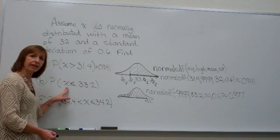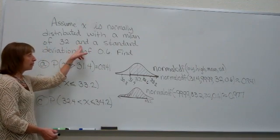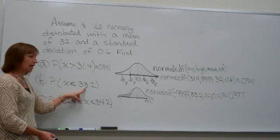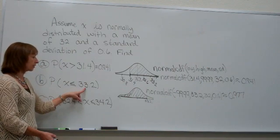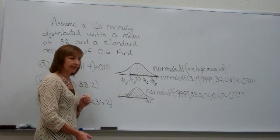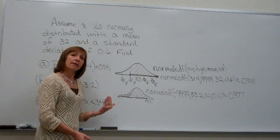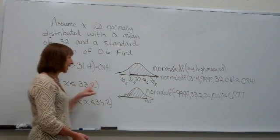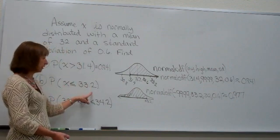So a probability of picking a value at random out of that distribution that my value picked at random would be less than or equal to 33.2 is a probability of 0.977. Or I could say 97.7% of that distribution has a value that's less than or equal to 33.2.